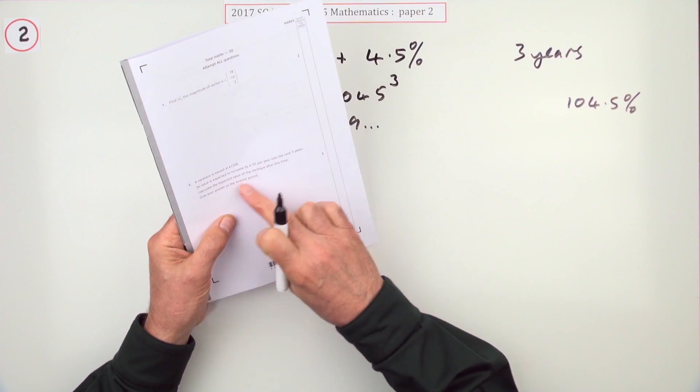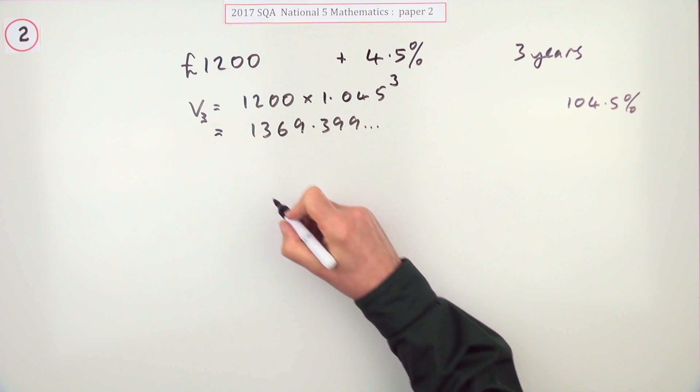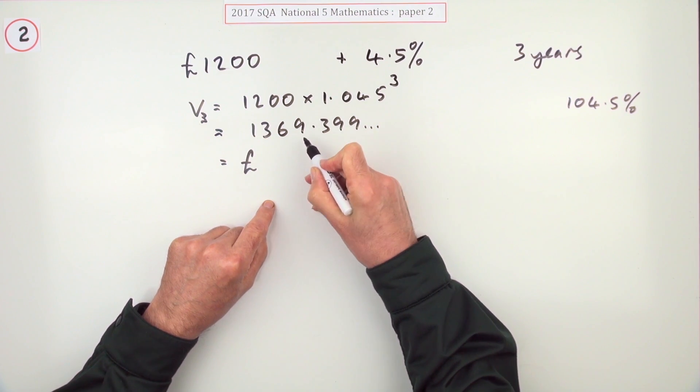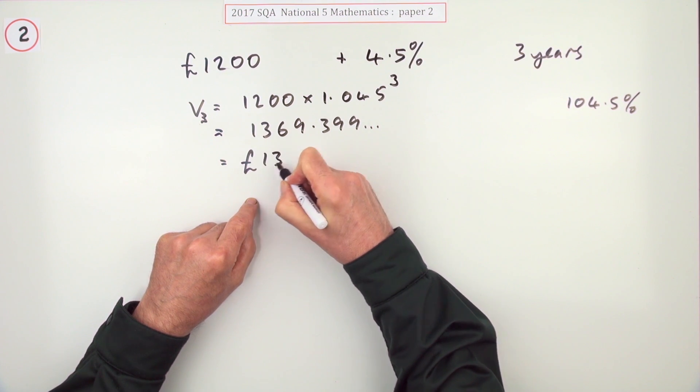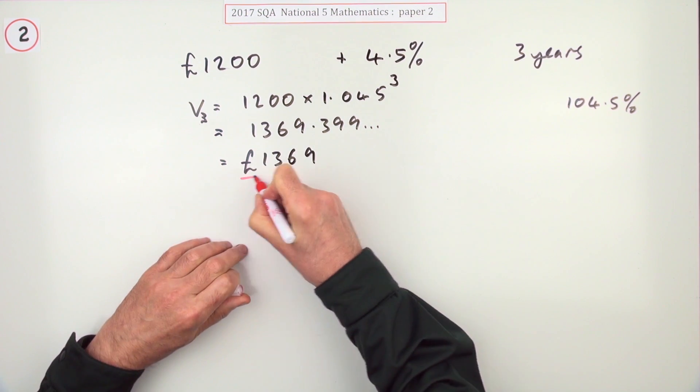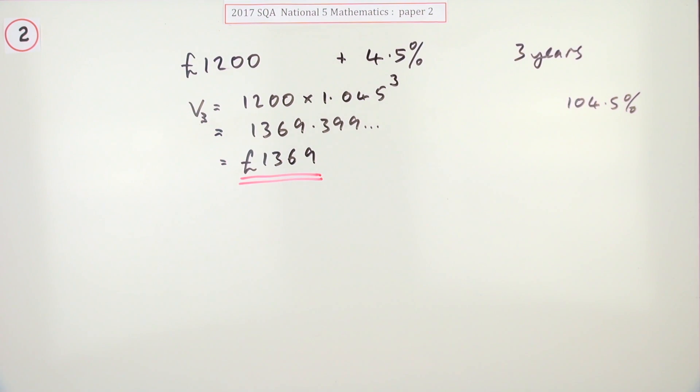And you check for any rounding - yes, give it to the nearest pound. So that means the value will be - and I'll put my units back in - to the nearest pound, well that's just three so I can ignore that, so that's £1369. It should be worth £1369 after three years.